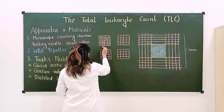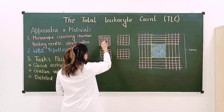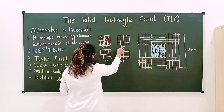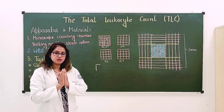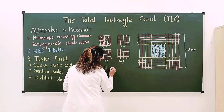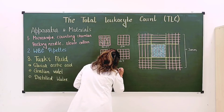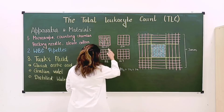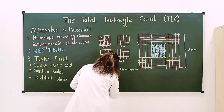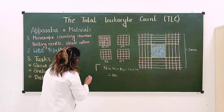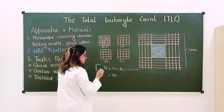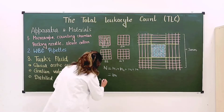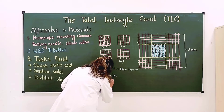Suppose the WBC counts in the four squares are N1=23, N2=24, N3=26, N4=27. The total N = N1 + N2 + N3 + N4 = 100. The formula for the number of WBCs per cubic millimeter of blood is N × 50.